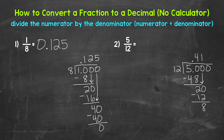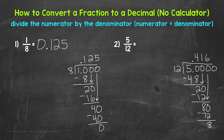Let's use another zero that we can bring down. Now we have 80 — 80 divided by 12. How many whole groups of 12 in 80? Six, that gets us to 72. Six times 12 is 72. Subtract — 80 minus 72 is 8. Let's use another zero and keep going. We have 80 again — 80 divided by 12. Six times 12 is 72. Subtract — we get 8. I'm going to stop there because that pattern is going to continue on forever.